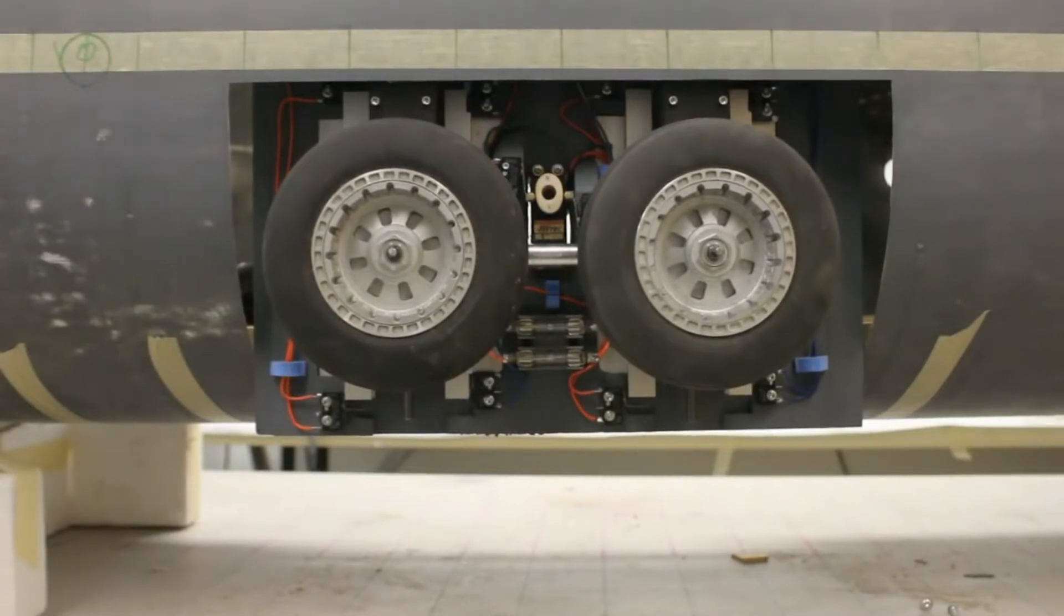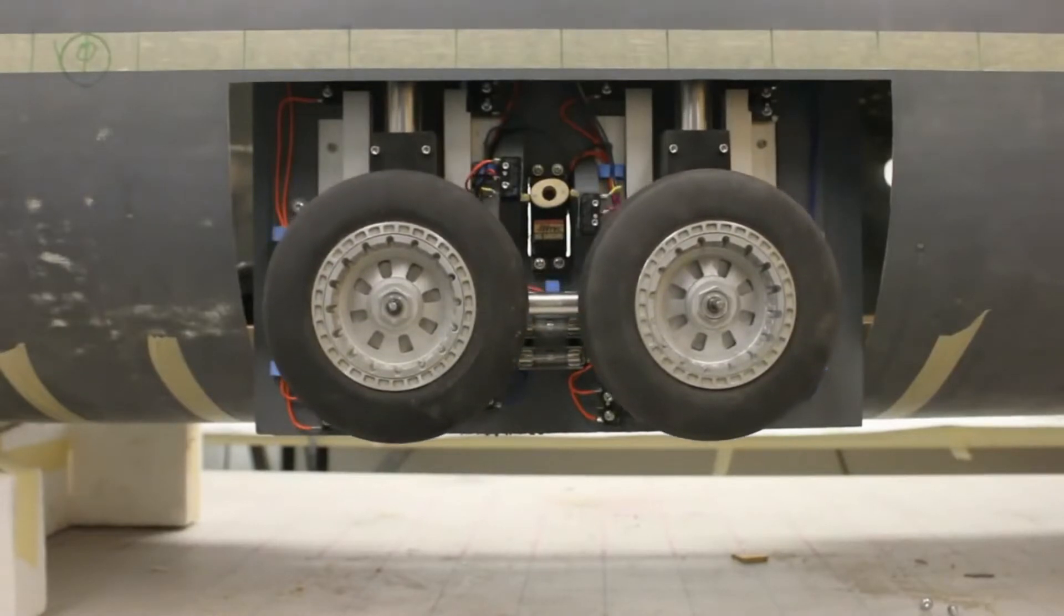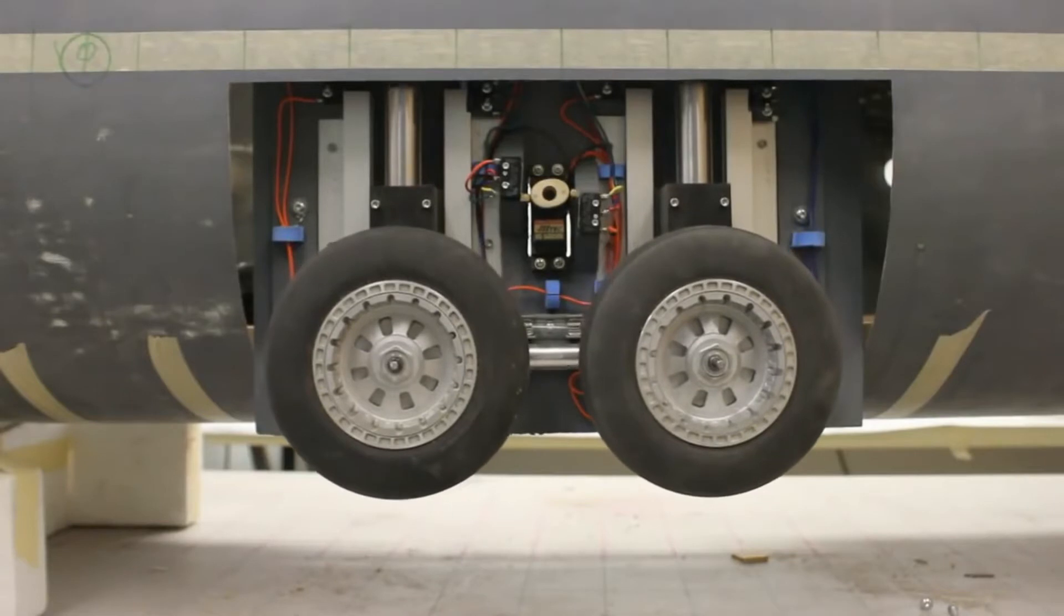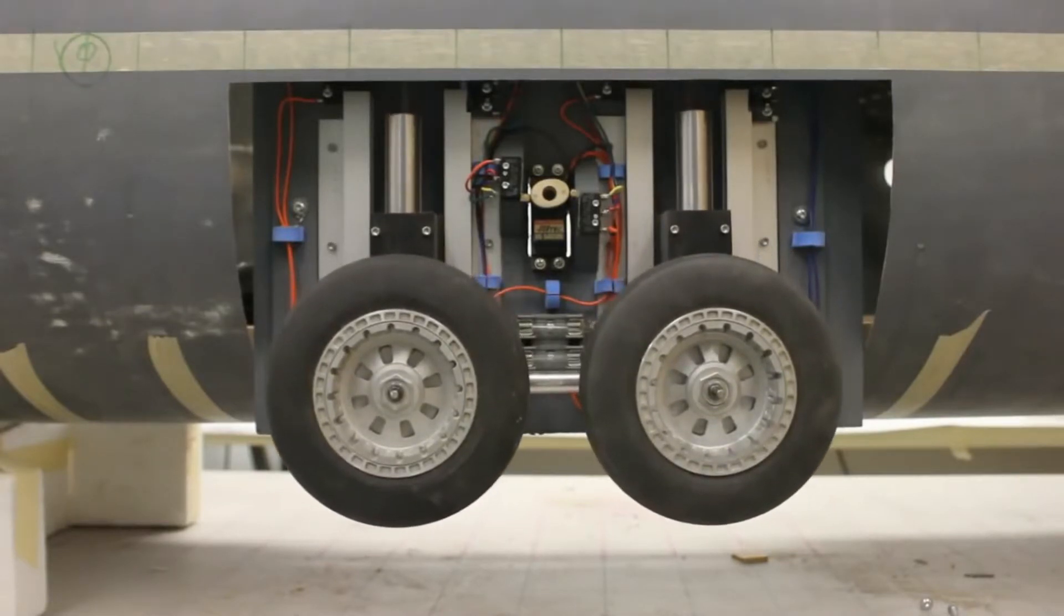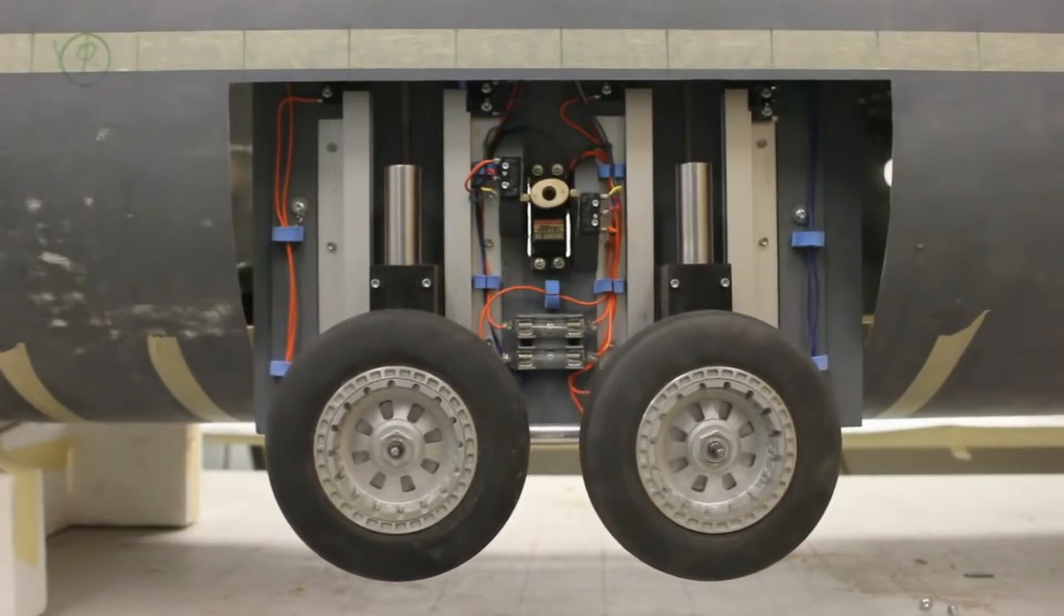These run the landing gear up and down. The servo in the middle you see is turning a cam. That cam was activating switches that would run the landing gear to the up travel and the down travel limit switches. That's what controls it.